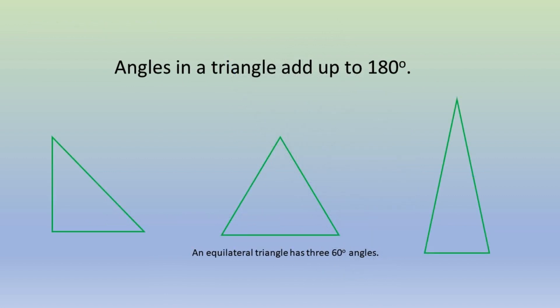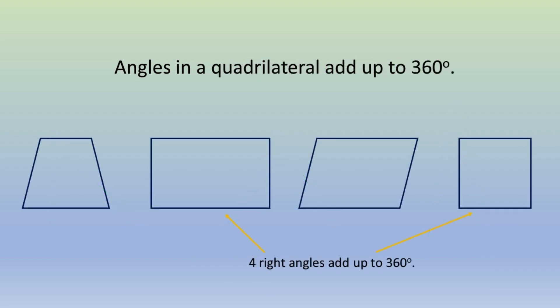Angles in a triangle add up to 180 degrees. An equilateral triangle has 60 degree angles. Angles in a quadrilateral add up to 360 degrees.